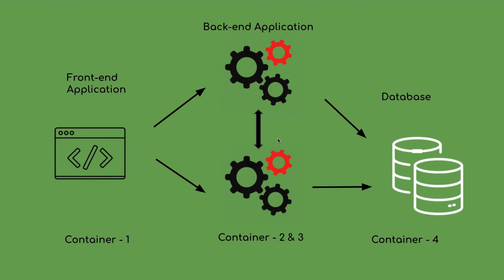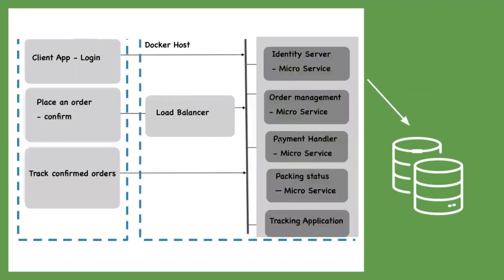For better understanding, if you visualize a shopping cart application, where an identity service exists for authentication and authorization, an inventory service exists for listing out available stock, and an order management system for accepting orders. Once an order has been confirmed by the system, the same information is notified to packing and tracking applications to initiate further activities.